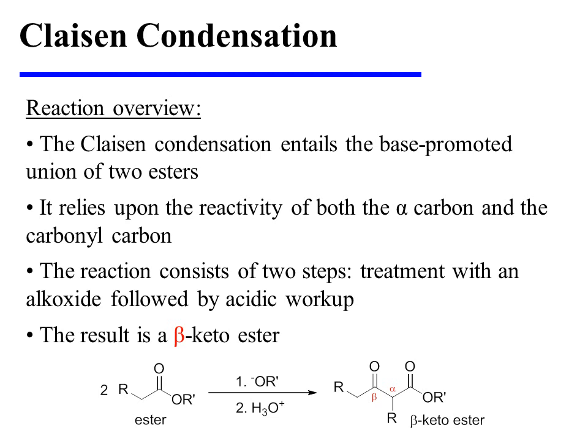The Claisen condensation entails the base-promoted union of two esters. It relies upon the reactivity of both the alpha carbon and the carbonyl carbon. The reaction consists of two steps: treatment with an alkoxide, followed by acidic workup. The result is a beta-ketoester.